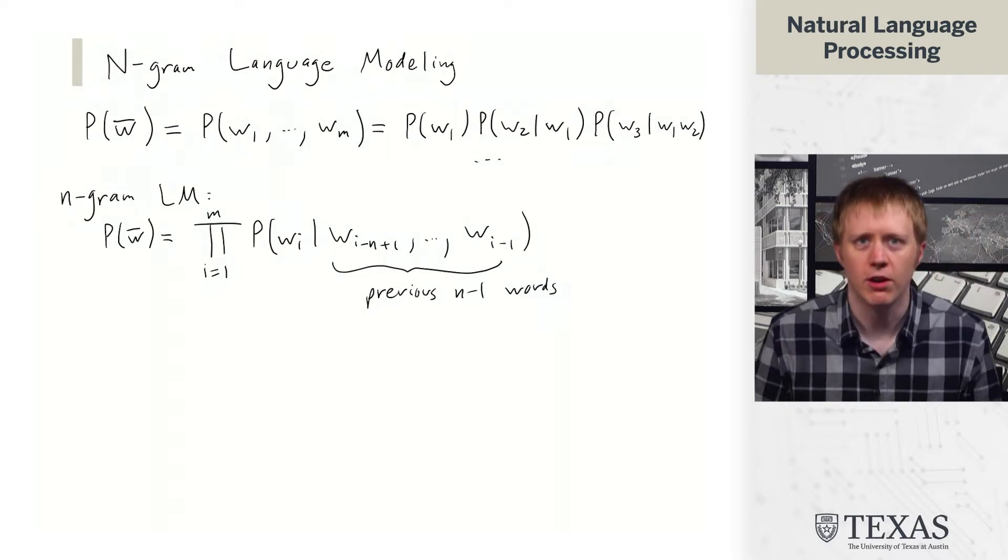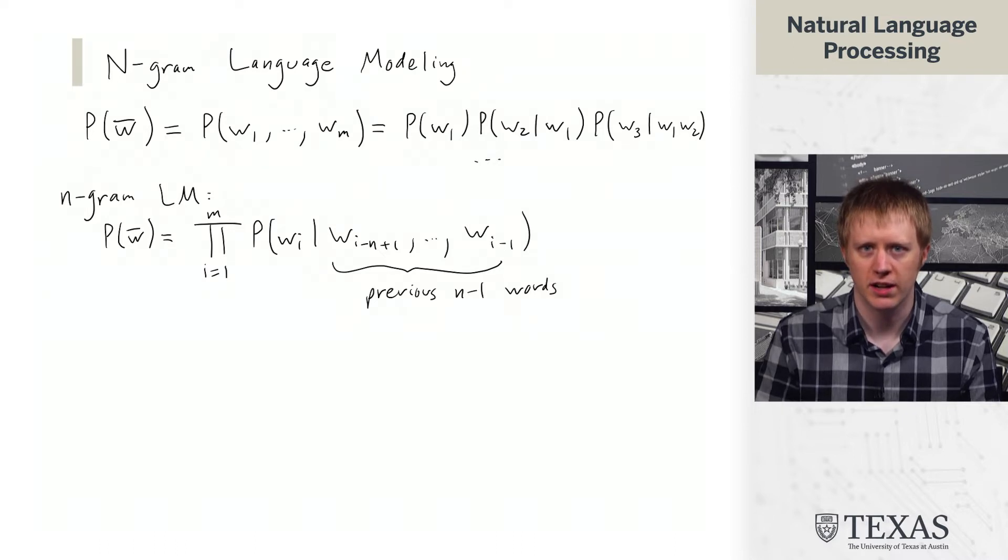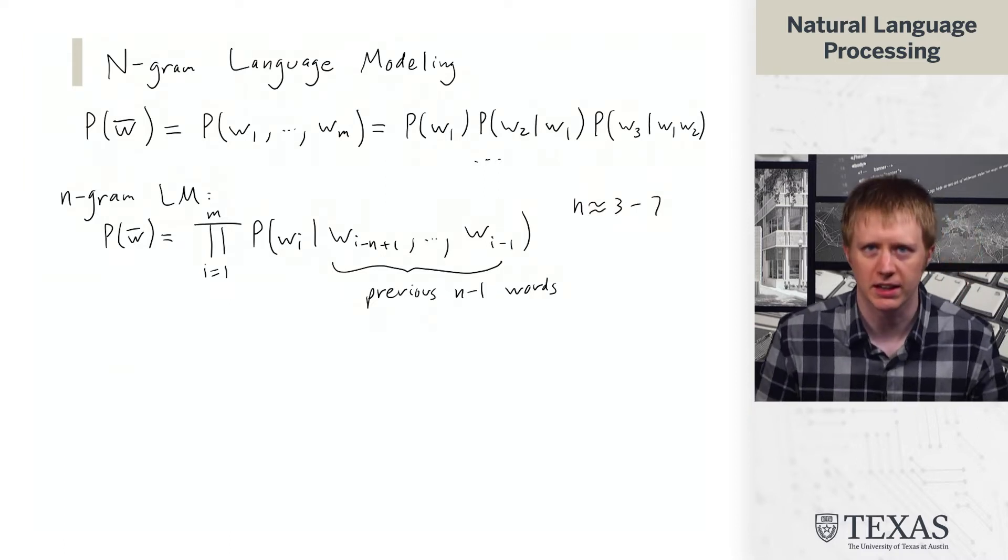It generates word wi conditioned on the previous n-1 words. So we didn't get very far in the expansion above, but once you get up to say w10, it's going to condition on all past nine words. And in an n-gram language model, we simplify that and only condition on the past n-1, and n typically has values that are something like 3 through 7 or something like that.